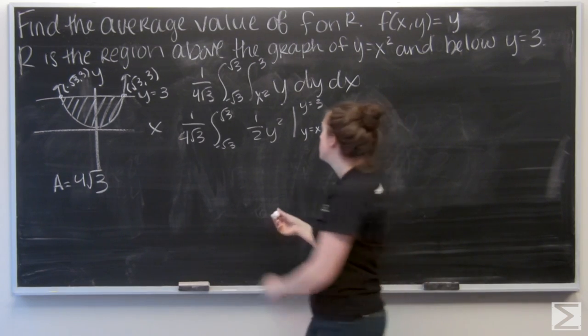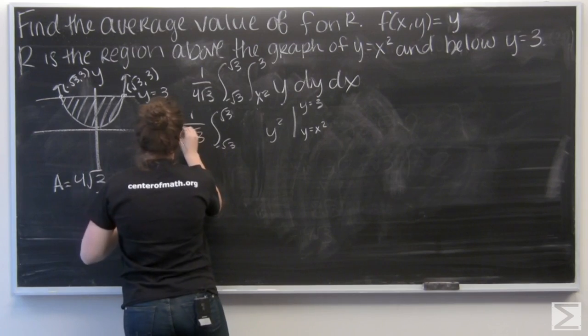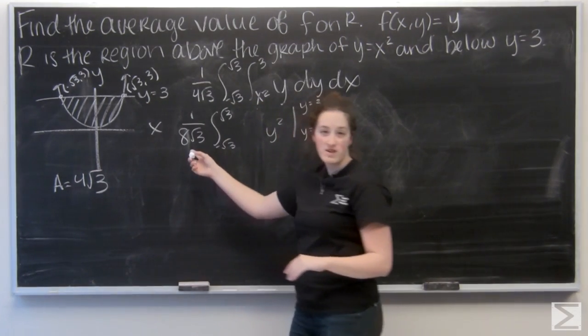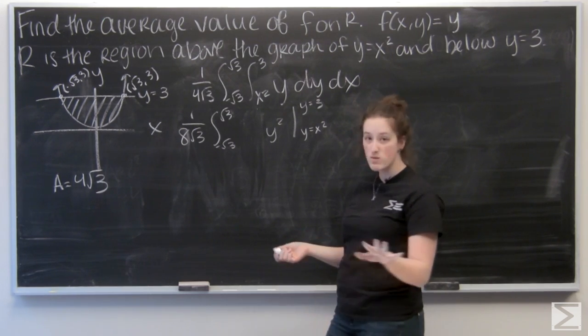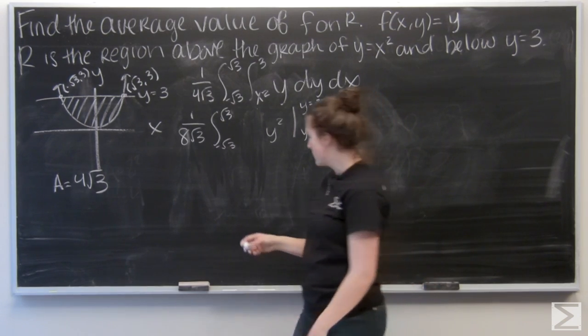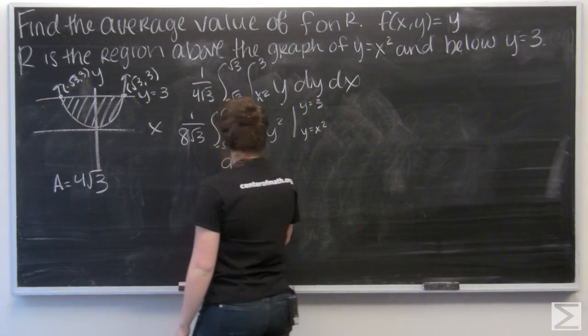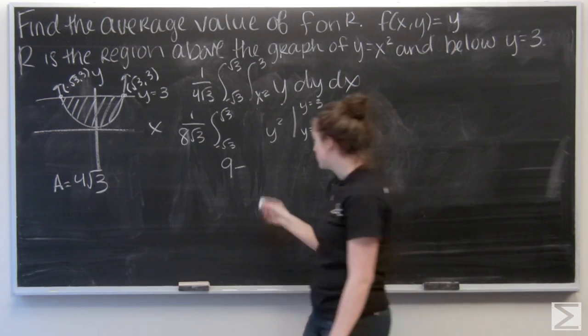I'm going to go and pull this 1 half out, so I don't have to deal with it until later. So that makes this outside fraction 1 over 8 root 3 instead of 1 over 4 root 3. But it will work out the same way. So let's go ahead and plug in. First, we're going to plug in 3. 3 squared is 9. And we're going to subtract x squared squared, or x to the 4th.